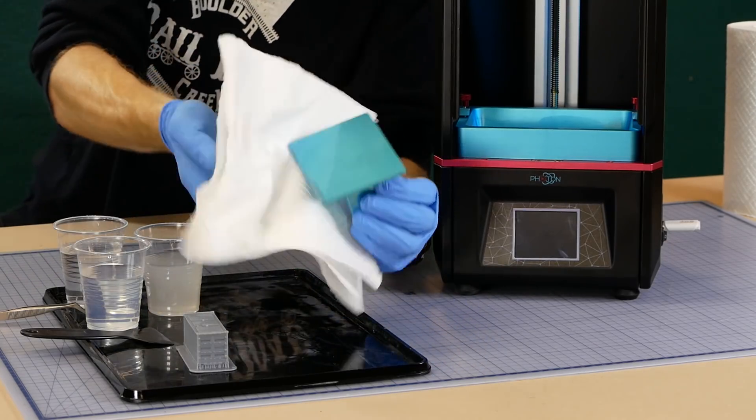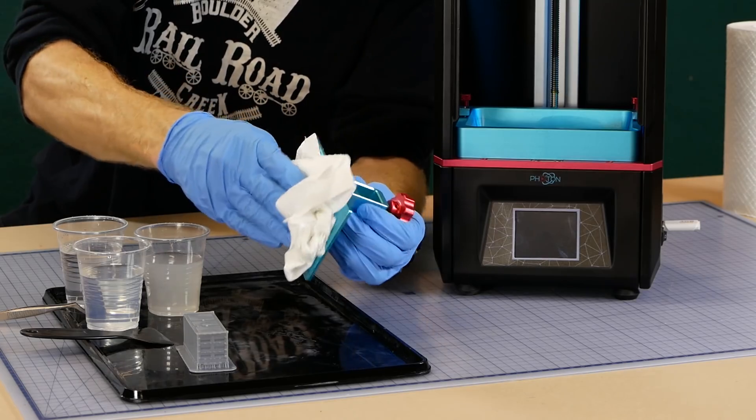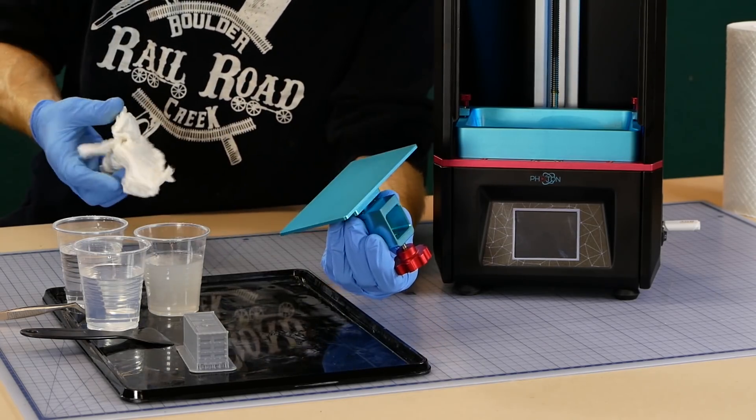To get the printer ready for another print we simply wipe down the build plate and reinstall it back inside the printer and we're ready to print again.